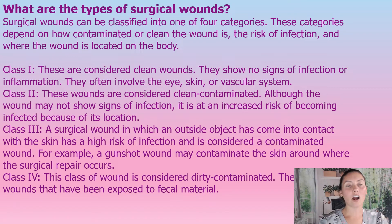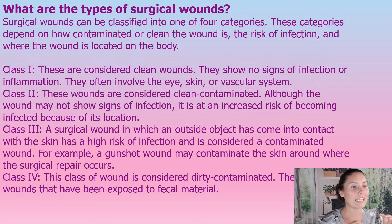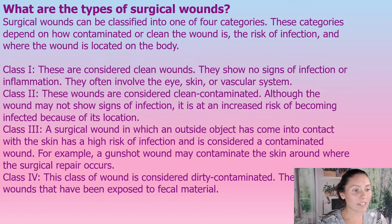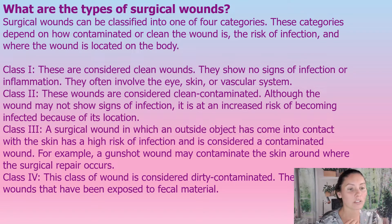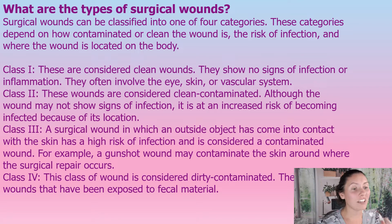There are four types of surgical wounds. These categories depend on how contaminated a wound is, the risk of infection, and where it's located on the body. Class one wounds are considered clean wounds — no signs of infection or inflammation. They often involve the eye, the skin, or vascular system.